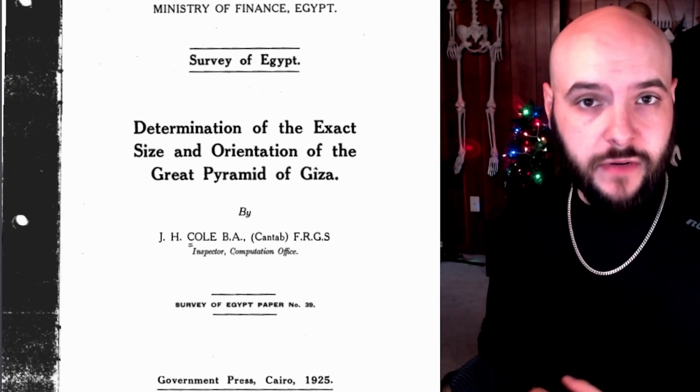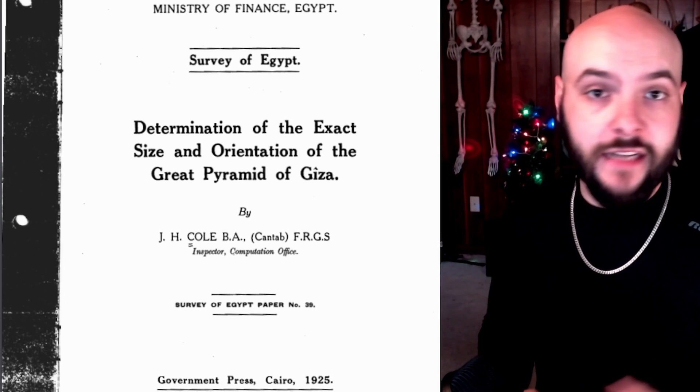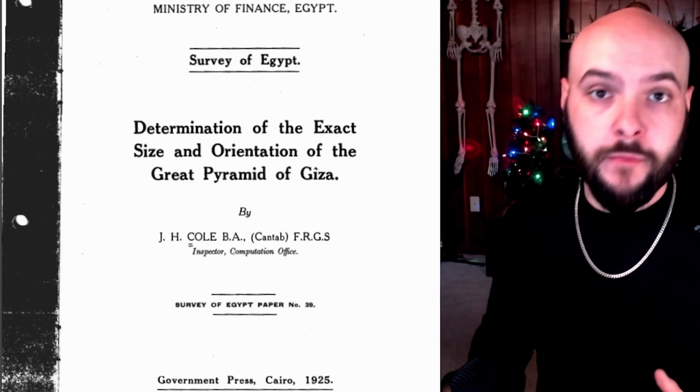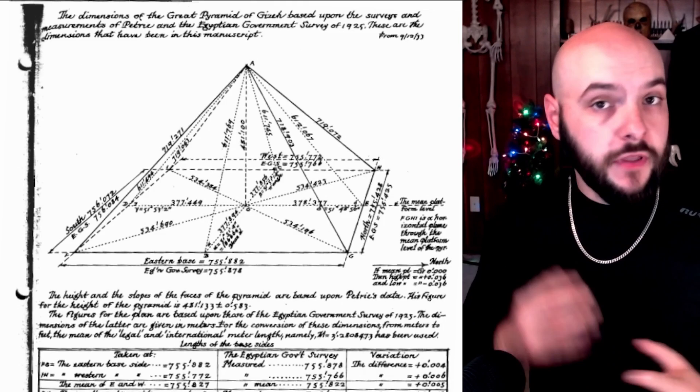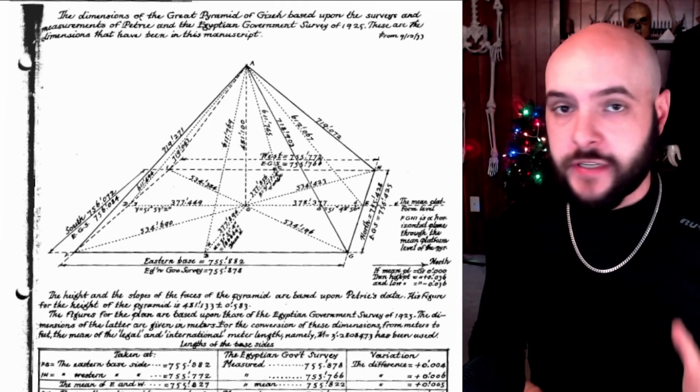Now the measurements for the Great Pyramid come from the surveys done by J.H. Cole in 1925 that was also confirmed by the Egyptian government and is also still used to this day as a standard. And I'll put the link to this PDF in the description down below.